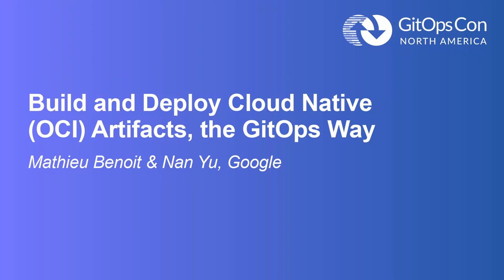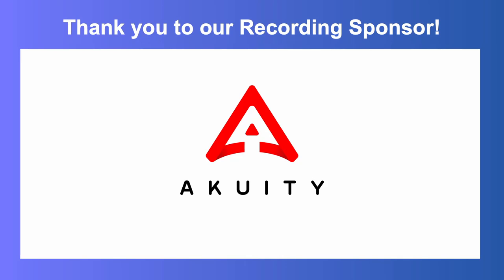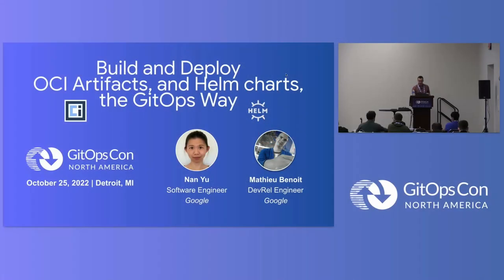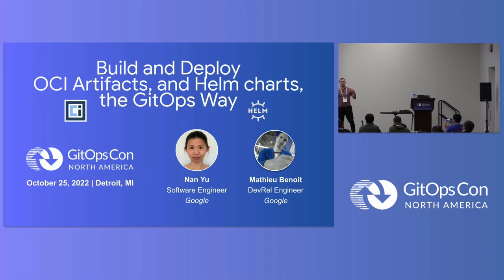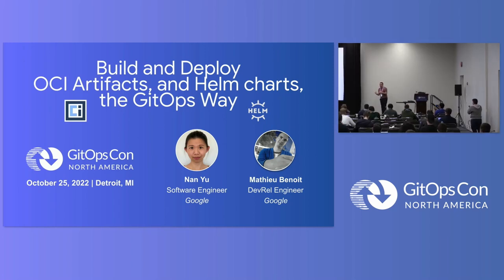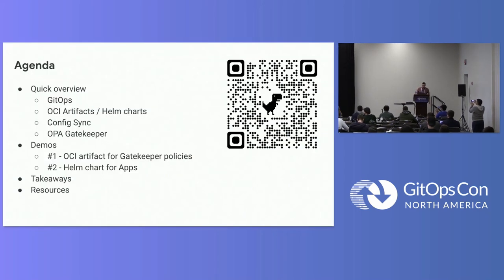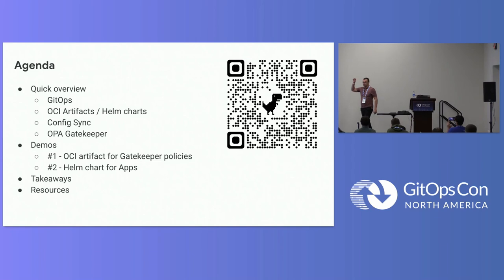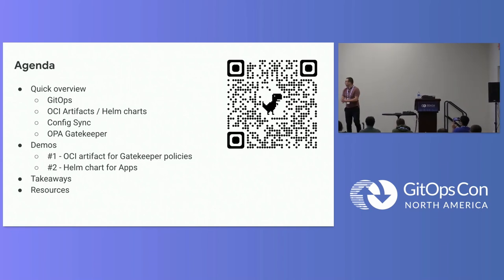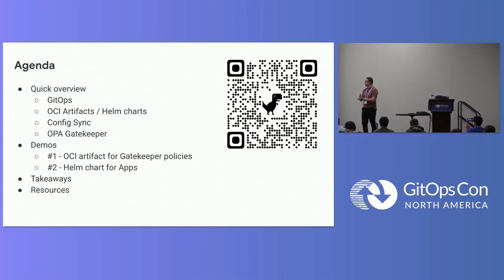Hi everyone. Very excited to be here. Nan is unfortunately not able to make it today, but she co-built this content with me. We will talk about OCI artifacts and more specifically Helm charts as well and how we could deploy them in a GitOps way. This QR code links to this actual presentation so you could download the PDF.